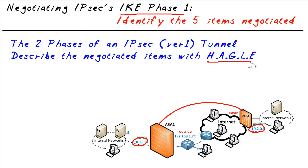A great way to remember the five specific things that have to be agreed to by these two devices is to use the keyword "haggle" — like we're going to go and haggle. What does HAGGLE represent? H-A-G-L-E. If you remember that, you'll be able to recall each one based on the letters. Let's take a look at each one.